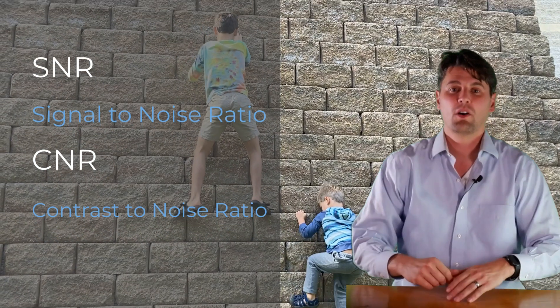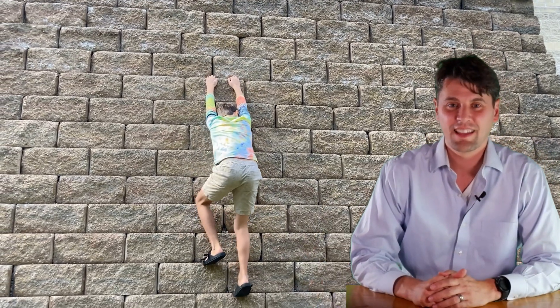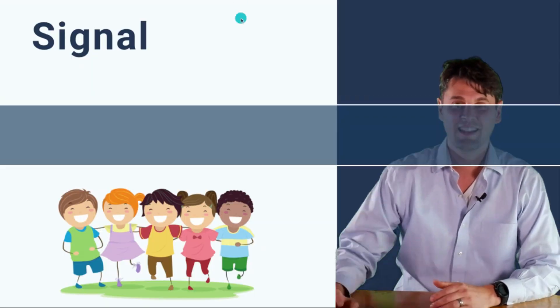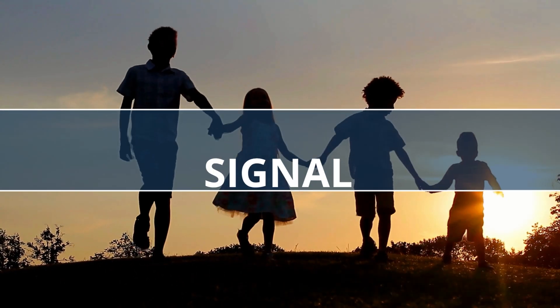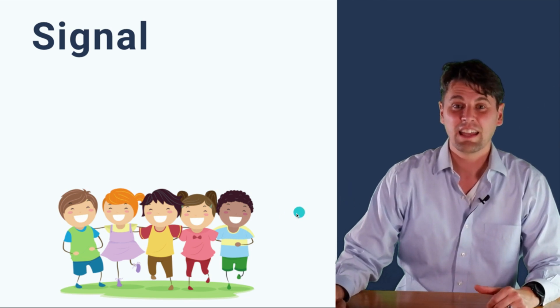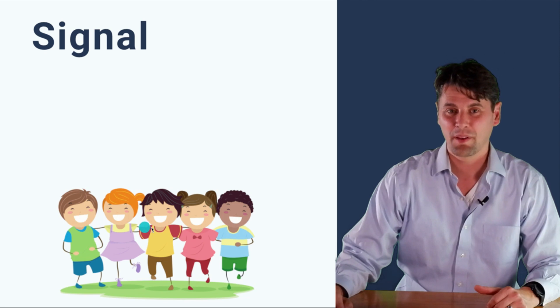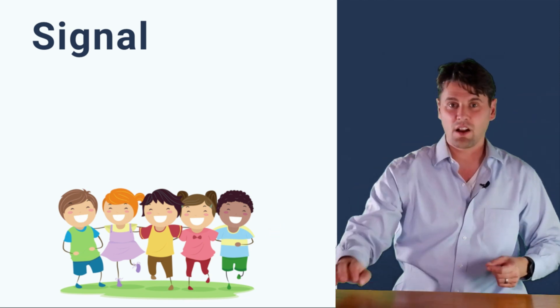So SNR is what we call signal-to-noise ratio. First, imagine if the signal that I'm trying to measure about the kids is actually their height. So first we get the 4K-ers to stand up in a line. I know that's a tricky task in and of itself, but the idea is that each kid is going to be lined up in a row here, and we can go through and measure each of their heights.